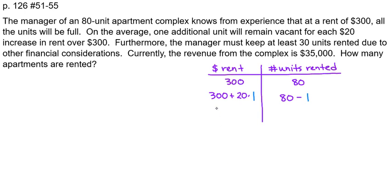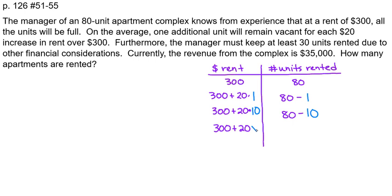Let's say they increase the price $20 ten times. How many units will be rented? Well, 10 units will be vacant. After doing this with numbers a few times, we can see what it would be like with a variable. So if the price was increased $20 some unknown number of times — x times — how many units would be rented? 80 minus x, because there would be x vacancies.